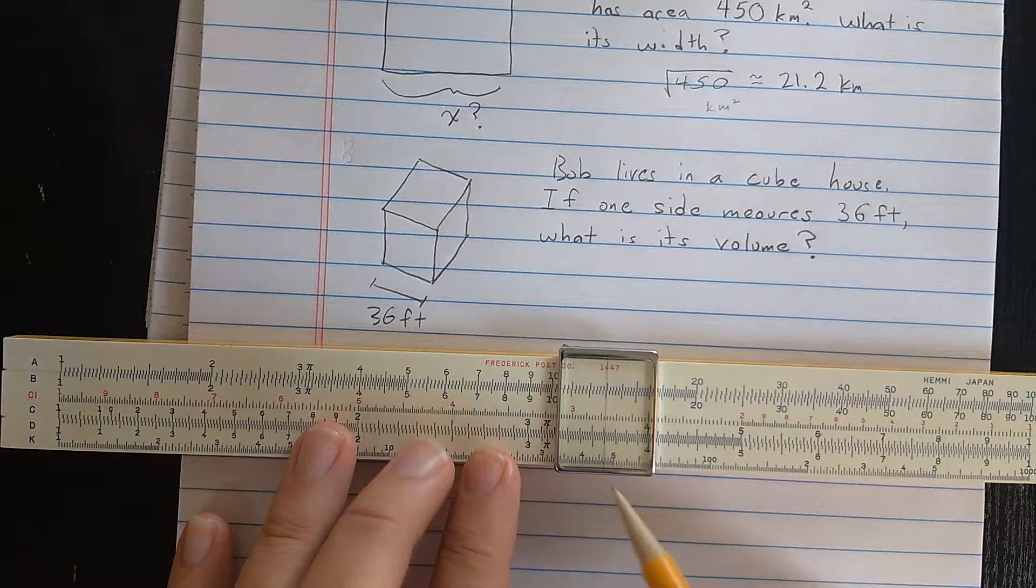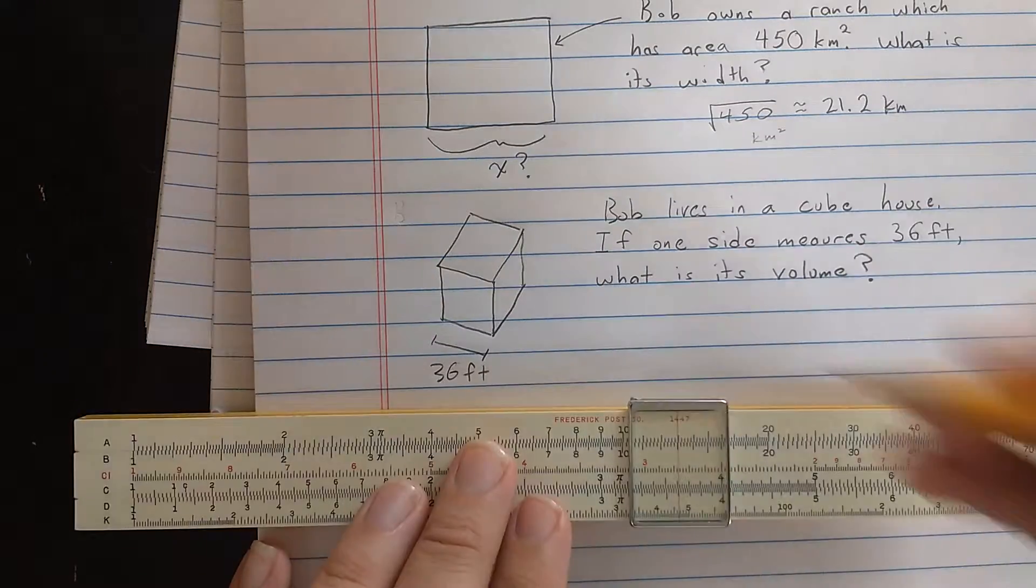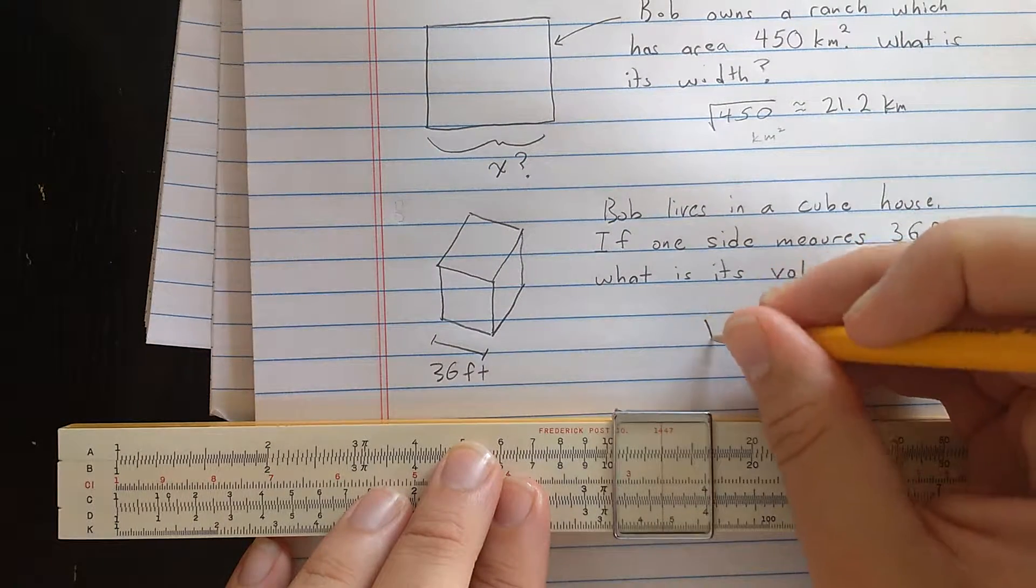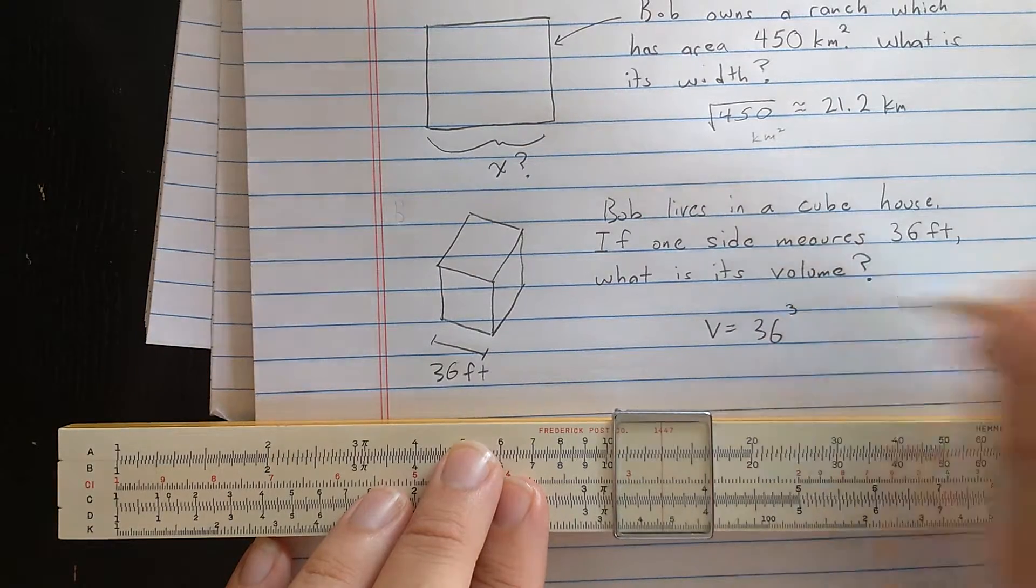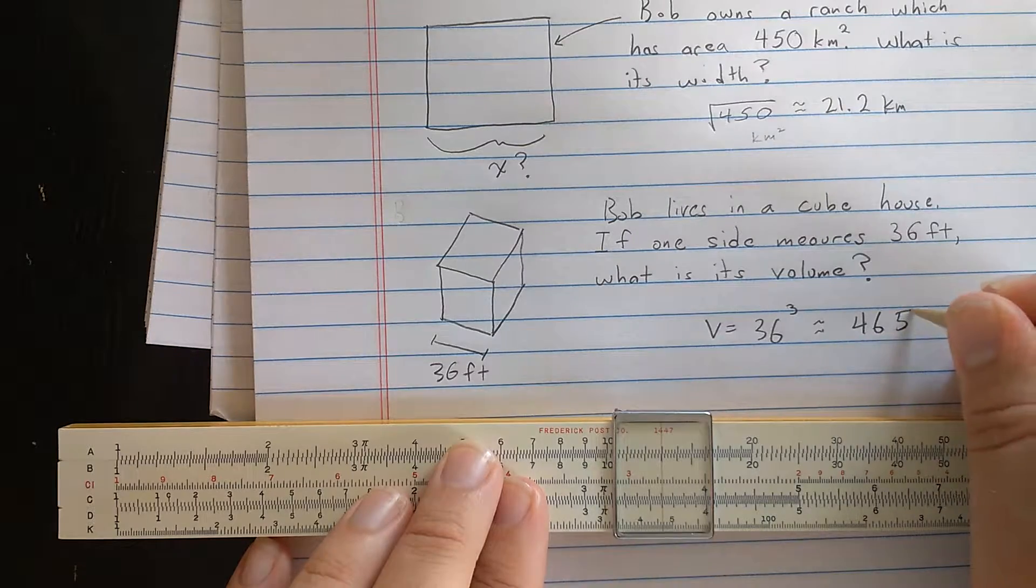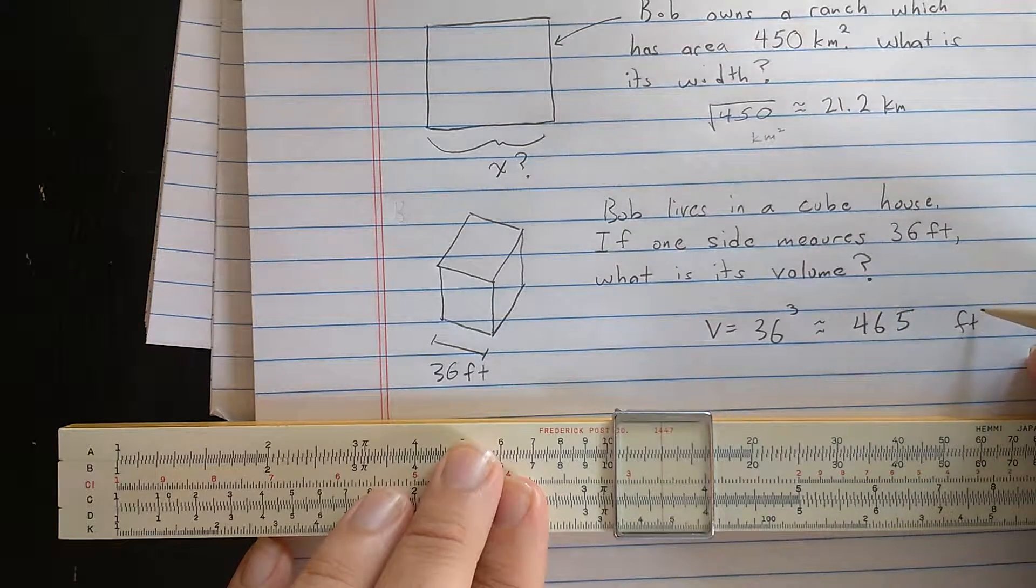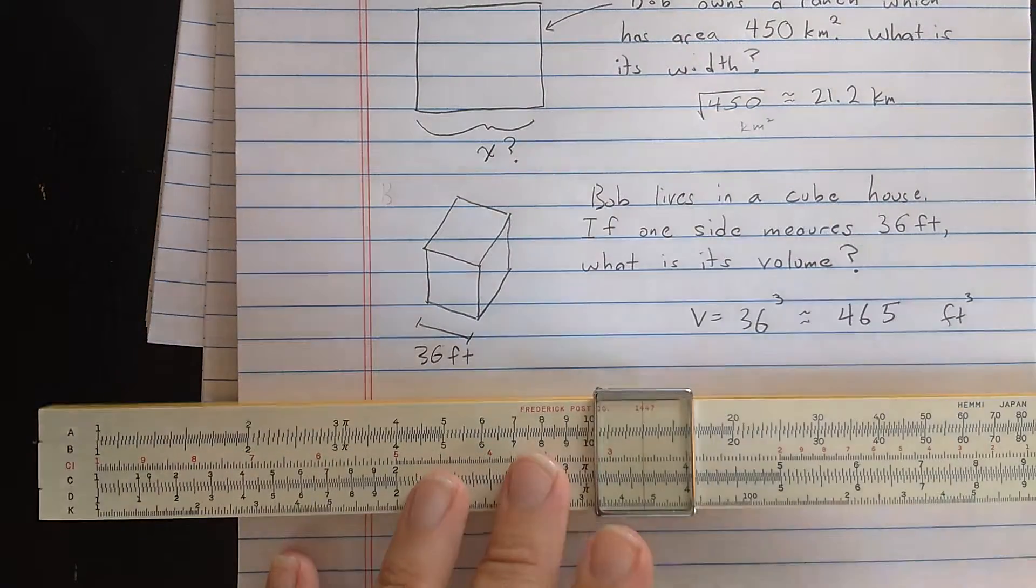And here I see about four, six and a half. So volume here is just 36 cubed. And this is about four, six and a half. This is going to be feet squared, or sorry, feet cubed, but I need the correct order of magnitude.